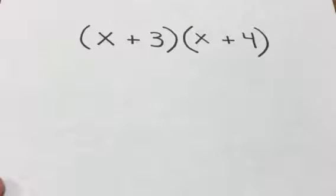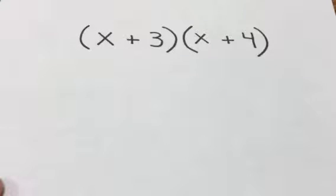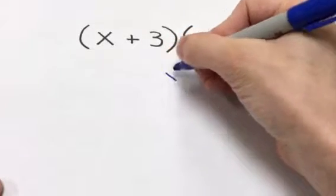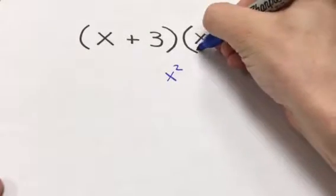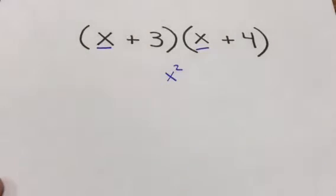When we do the FOIL method, we're focusing on four letters: F, O, I, and L, and they all stand for something. The F stands for 'first' — we take the first two terms from the two parentheses and multiply them together. So X times X gives us X squared, which is our first term.